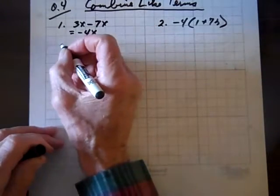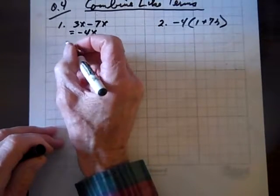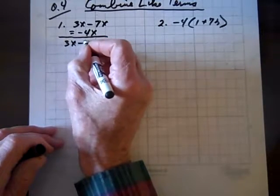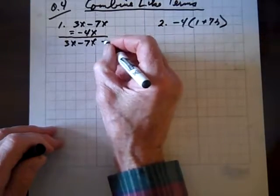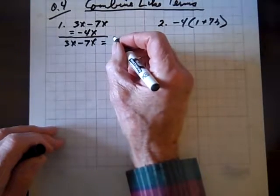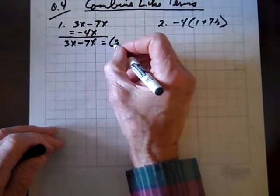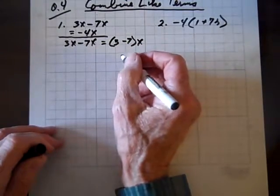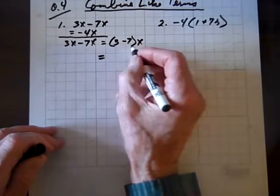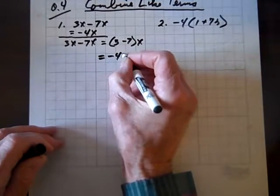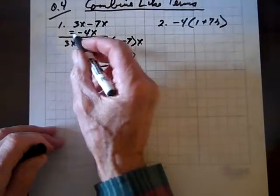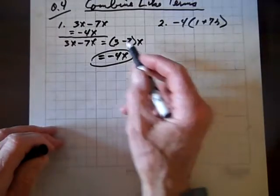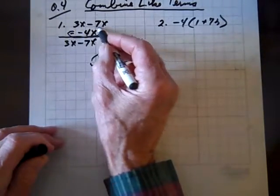But let me show you another way to do that. We can rewrite this as 3x minus 7x equals 3 minus 7 times x, factoring x out of each term, and that becomes 3 minus 7 is negative 4, and we still have our friend x there. So either way, whatever you're comfortable with. We haven't talked about factoring yet, so you may feel more comfortable with what we did up here.